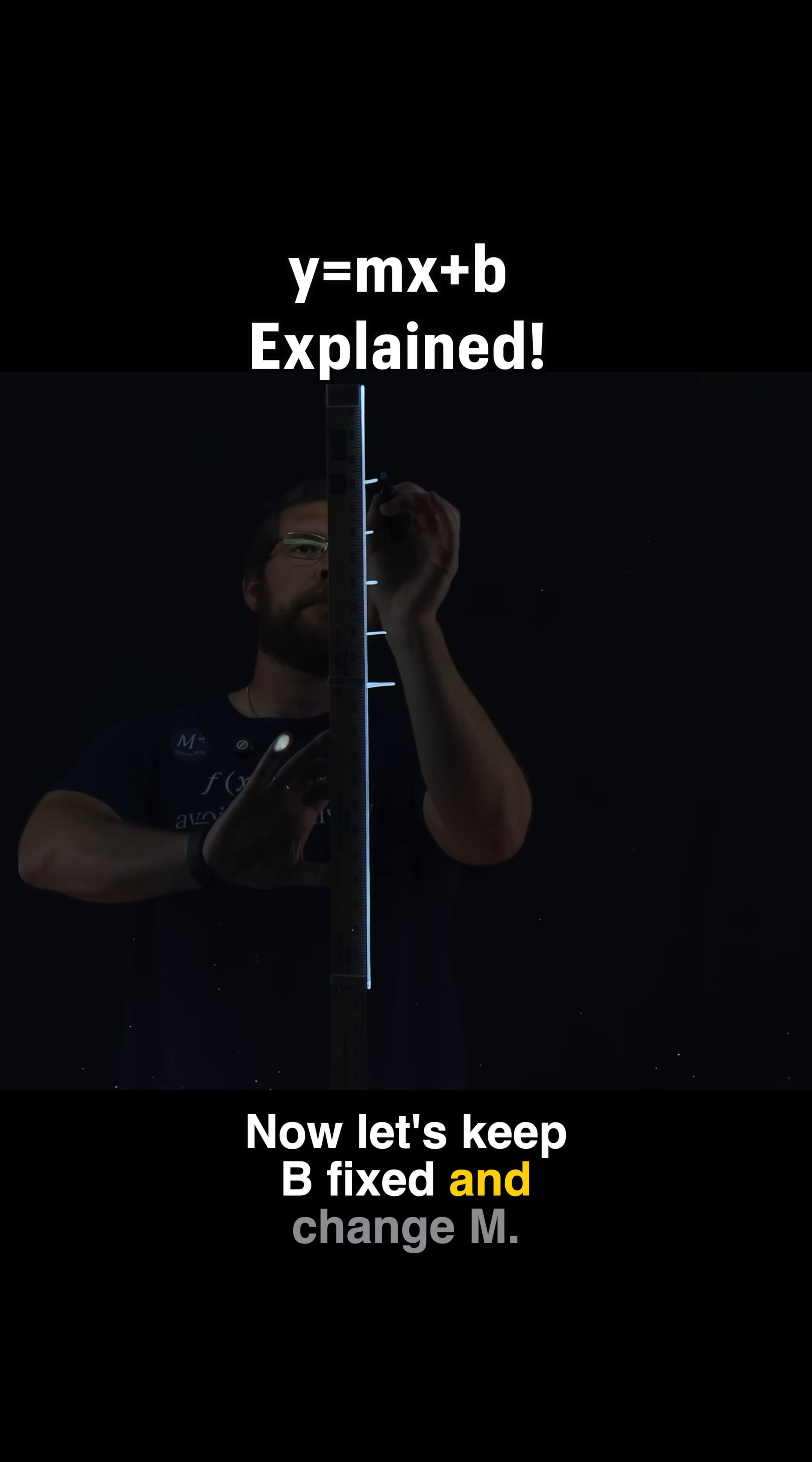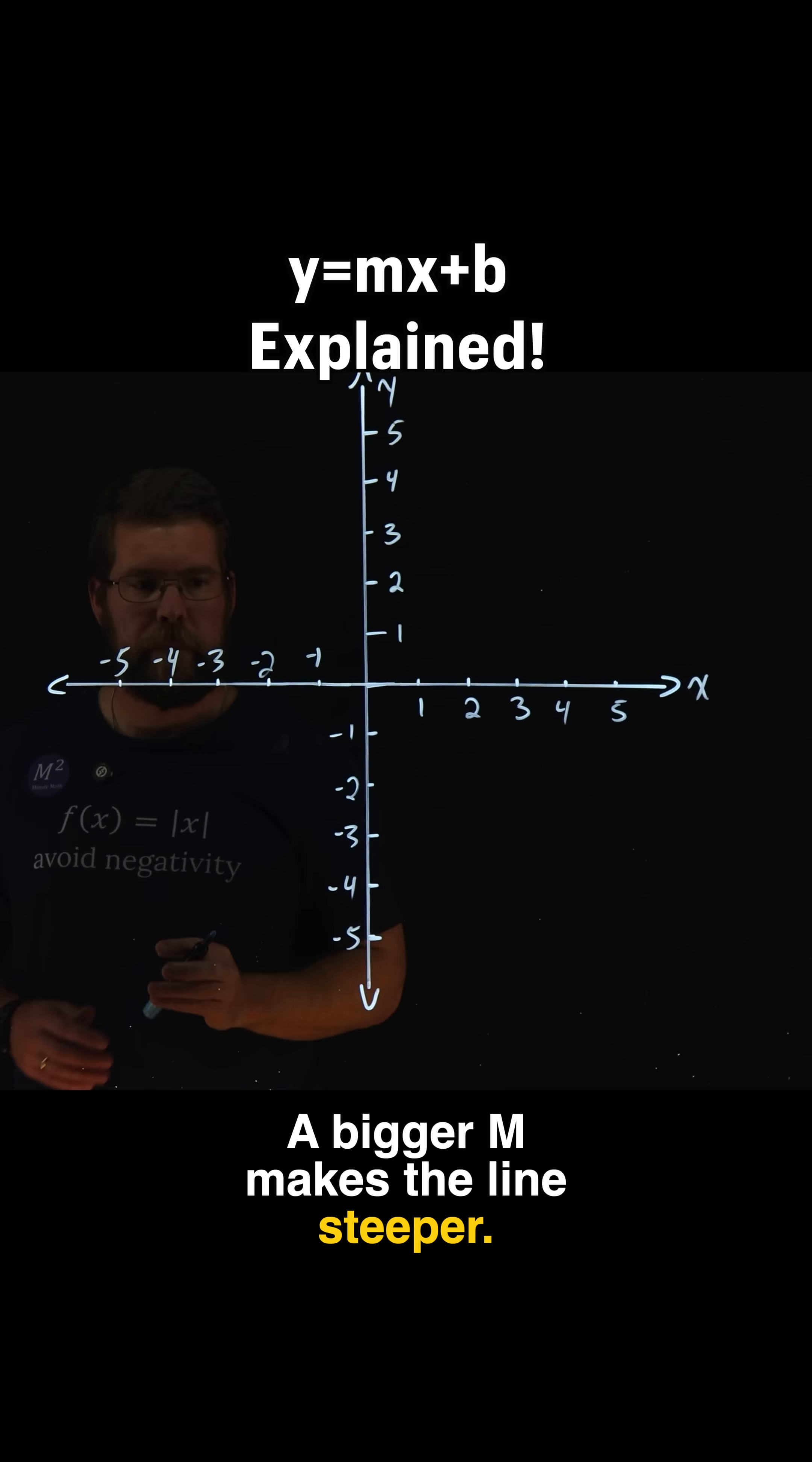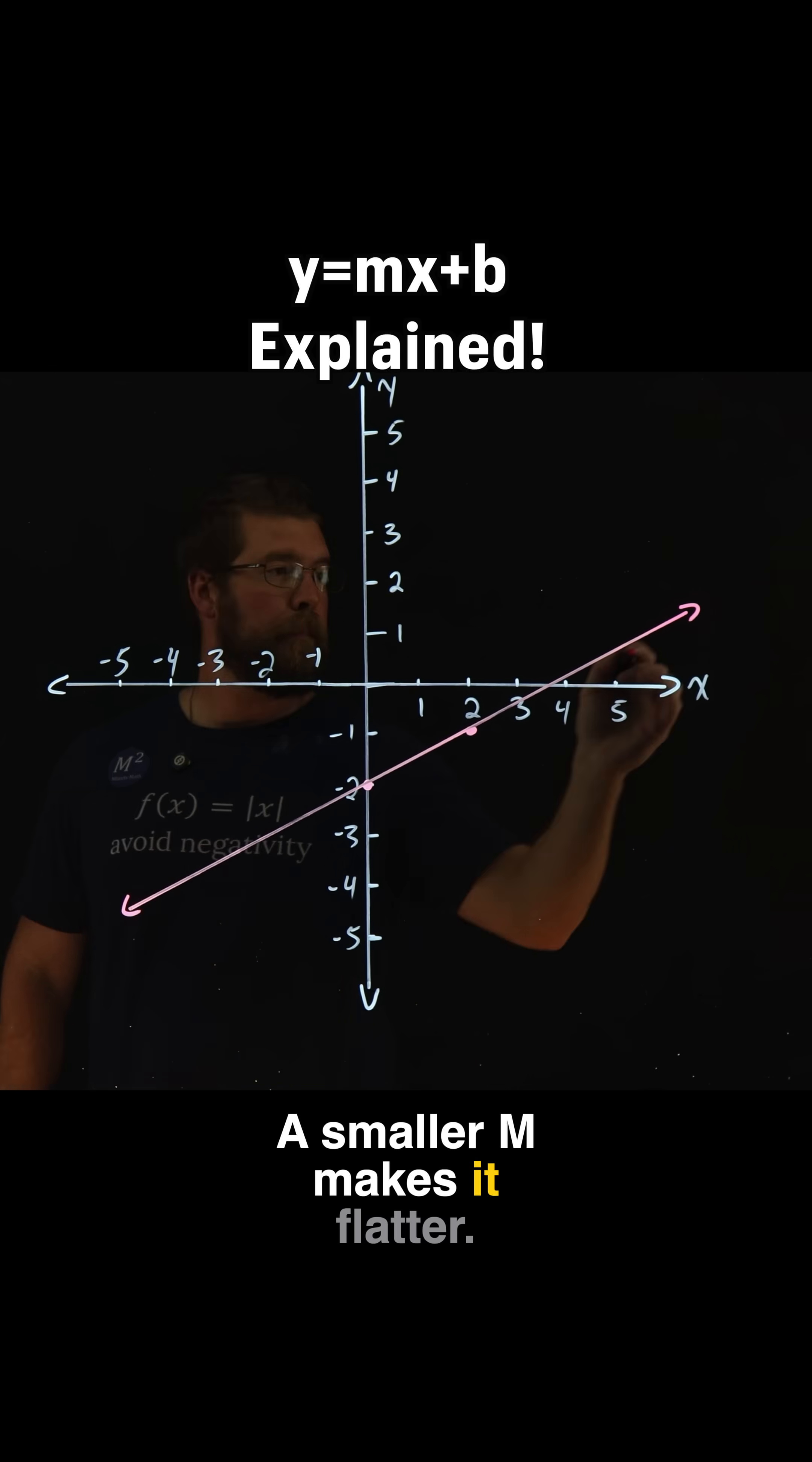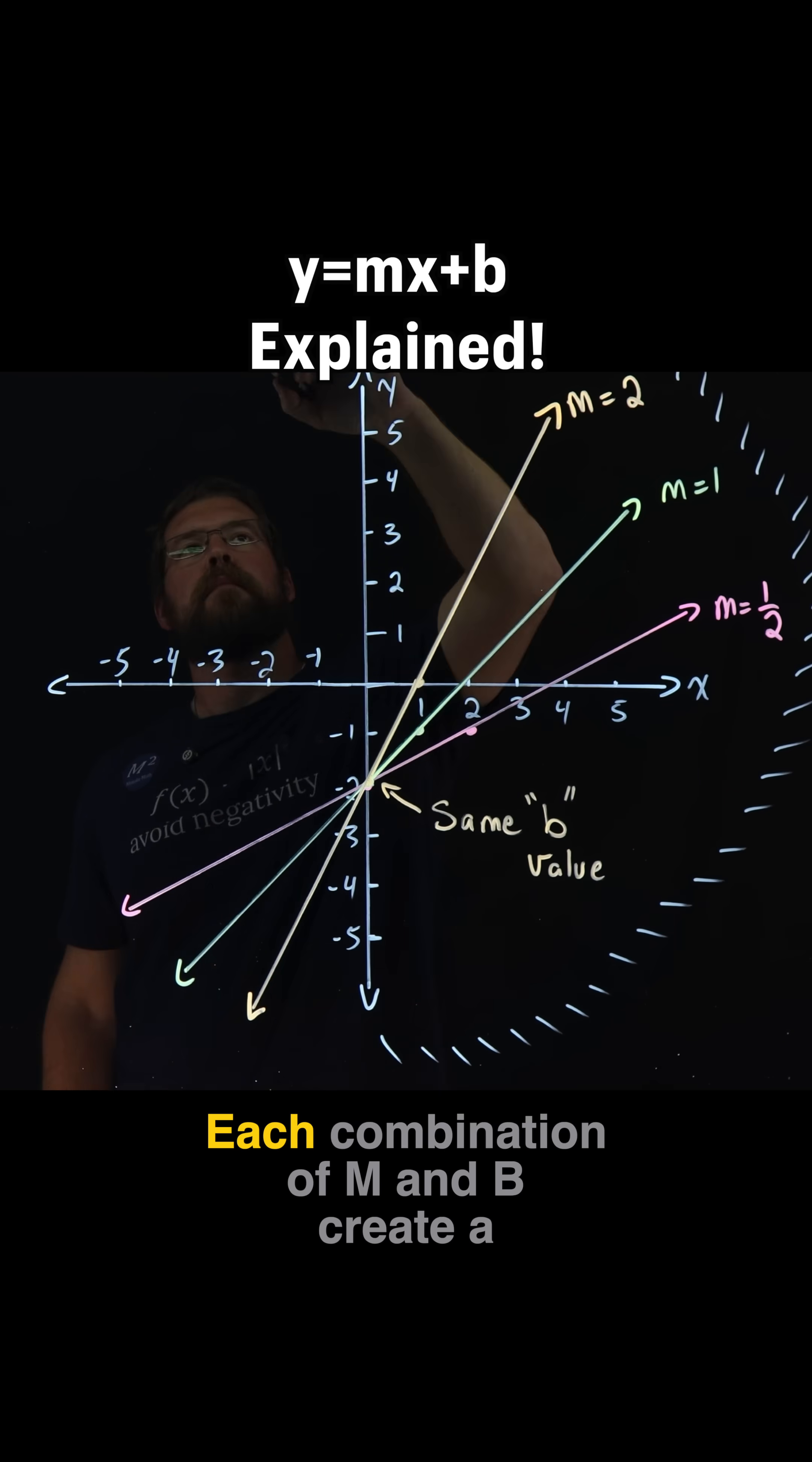Now, let's keep b fixed and change m. A bigger m makes the line steeper. A smaller m makes it flatter. Negative m, the line tilts downward instead.